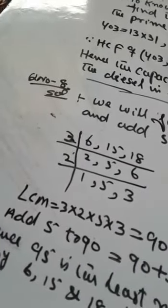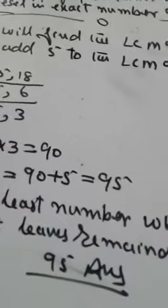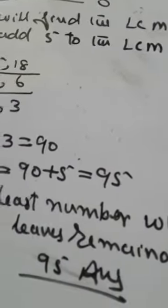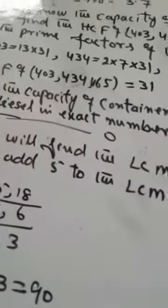Let's see, 6, 15, and 18. The LCM - we want the LCM, which is 90. Now we add 5, so 90 plus 5 equals 95. This is the smallest number that when divided leaves the remainder.